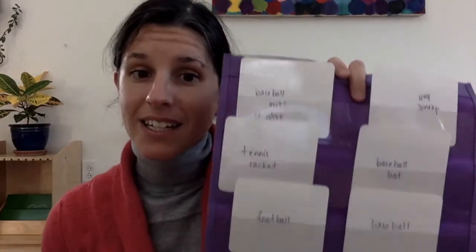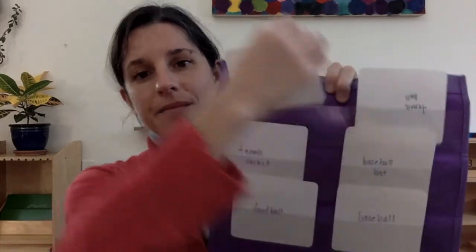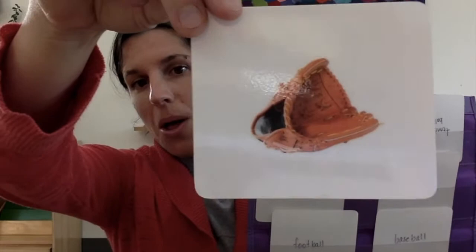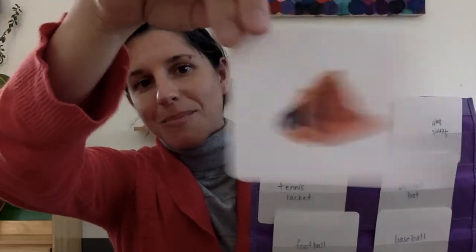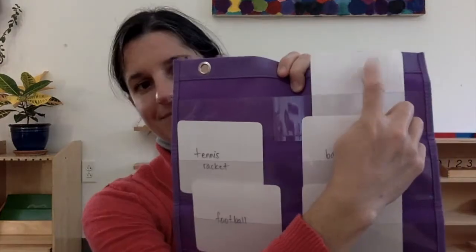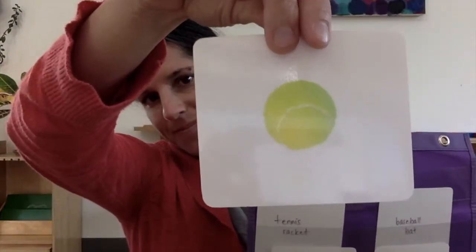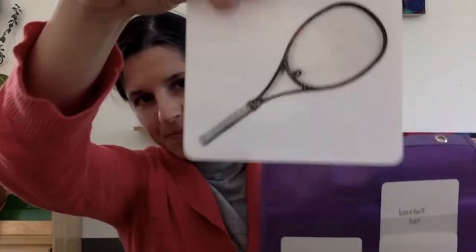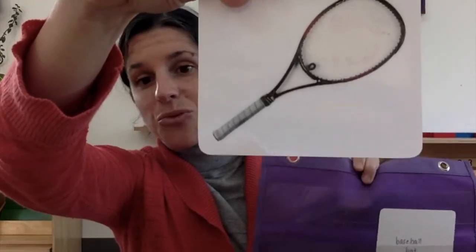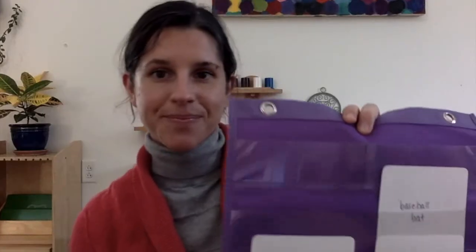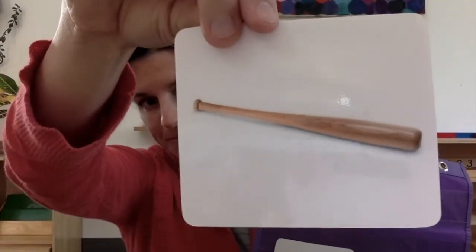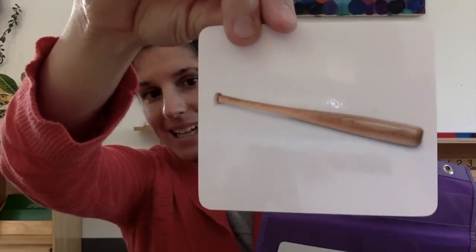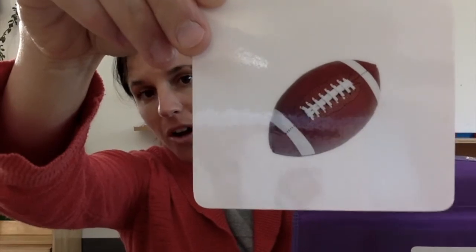All right, let's play knock-knock and see if you remember them. Who's there? Baseball mitt or baseball glove. Who's there? Tennis ball. Goodbye tennis ball. Who's there? Tennis racket. Goodbye tennis racket. Who's there? Baseball bat. Goodbye baseball bat. Who's there? Football. Goodbye football.